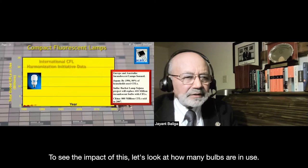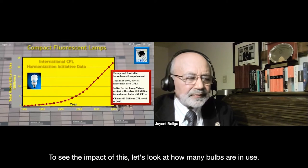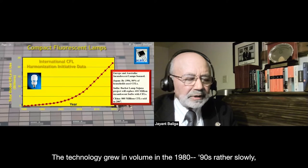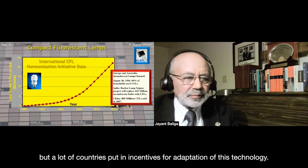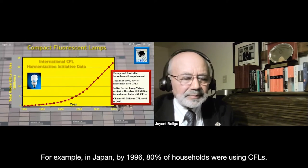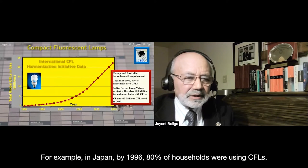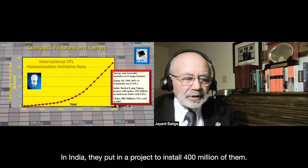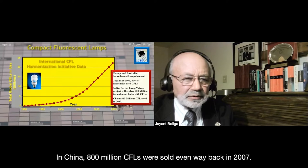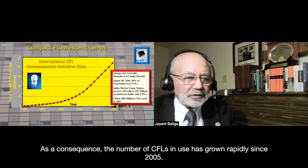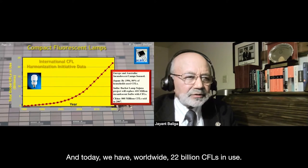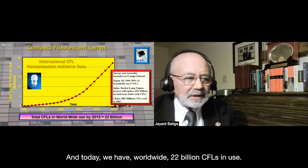To see the impact, let's look at how many bulbs are in use. The technology grew slowly in the 1990s, but many countries put in incentives. In Japan, by 1996, 80% of households were using CFLs. India installed a project for 400 million CFLs. China sold 800 million CFLs as far back as 2007. As a consequence, CFL numbers grew rapidly after 2005, and today we have 22 billion CFLs in use worldwide.